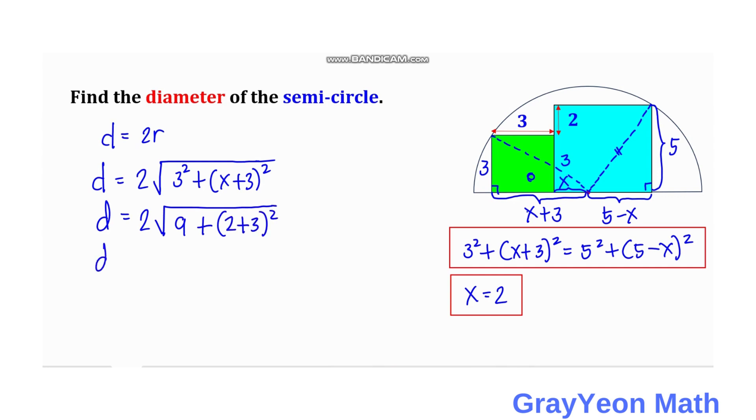So d is equal to 2 times 3 square which is 9 plus x is 2 plus 3 square. So d is equal to 2 times 25. This becomes 5 square which is 25, so 9 plus 25. So d is equal to 2 times the square root of 34 units, and that is our answer.